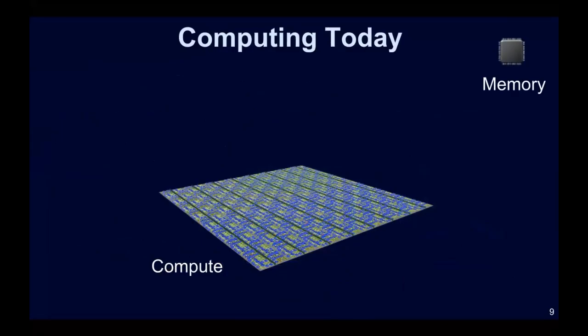If you think about computing today, in spite of massive progress over the past 60 years, computing is fairly constrained. You have a computer chip that is essentially a two-dimensional space of transistors — computing chips go to the third dimension but only for interconnects. And then you have a memory chip that is quite far from the compute chip. As I was talking about the memory wall, you spend all your time and energy going back and forth between the compute chip and the memory chip, regardless of whether you're talking about programmable processors or hardware accelerators.